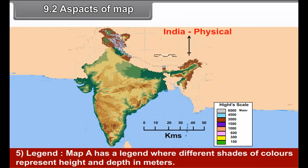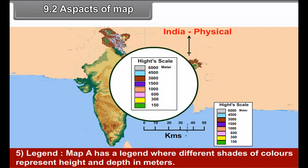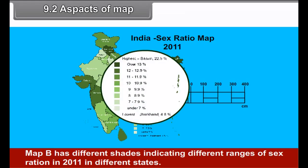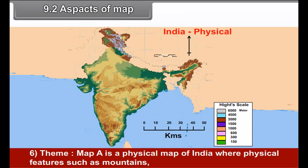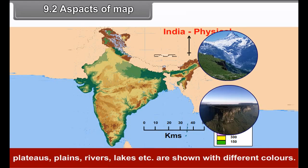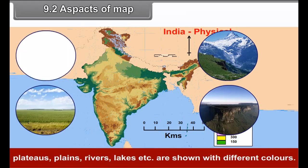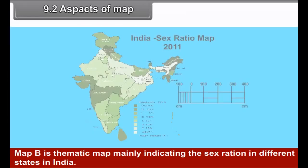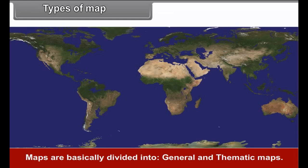5. Legend. Map A has a legend where different shades of colors represent height and depth in meters. Map B has different shades indicating different ranges of sex ratio in 2011 in different states. 6. Theme. Map A is a physical map of India where physical features such as mountains, plateaus, plains, rivers, lakes, etc. are shown with different colors. Map B is a thematic map mainly indicating the sex ratio in different states in India.